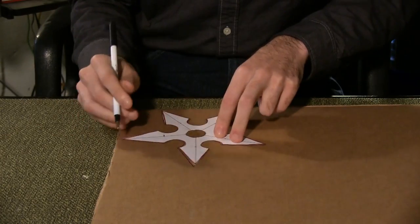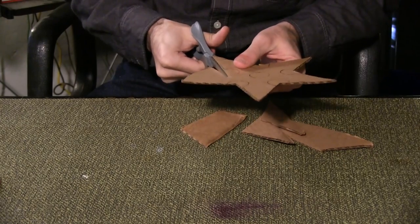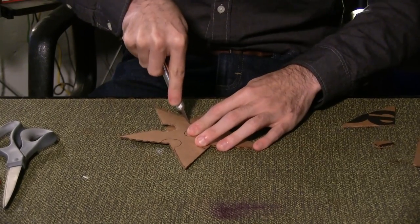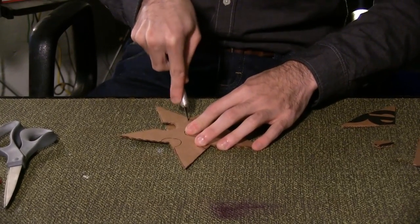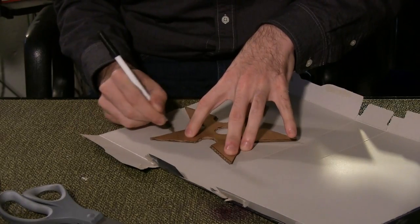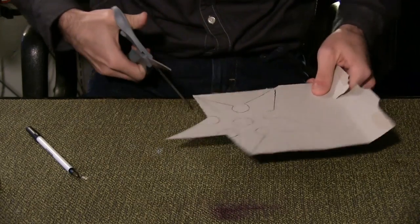Trace the template onto a piece of cardboard and cut out the design. Remember to exercise caution when using an exacto blade. Use the cardboard template to draw 2 more templates on the cardstock and cut out the designs.